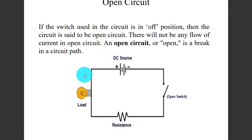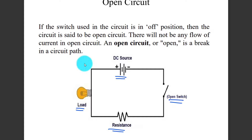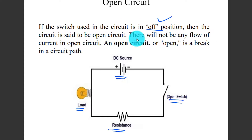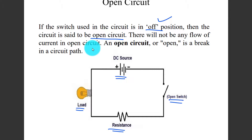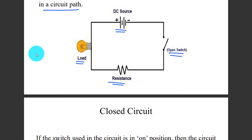What is an open circuit? In a circuit with a DC source, battery, resistance, and load bulb — if the switch used in the circuit is in the off position, then the circuit is said to be an open circuit. There will be no flow of current, because there is a break in the circular path.